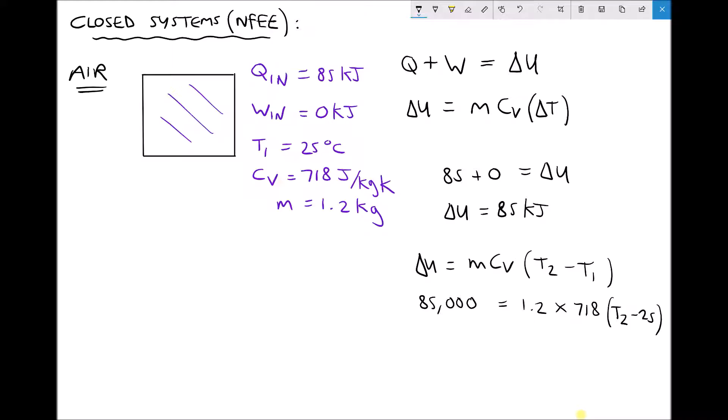Next we need to divide each side by 1.2 times 718, so this bracket here. We're going to get T2 minus 25 equals 85,000 divided by 1.2 times 718.